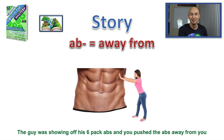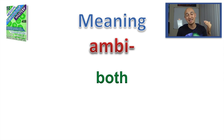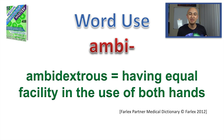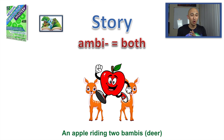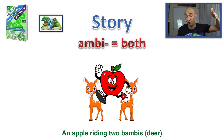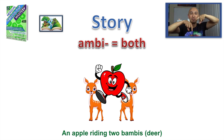Next one is AMBI, which means 'both.' Ambidextrous means having equal facility in the use of both hands. The image is an apple riding two Bambis — two deer. So an apple was on top of two Bambis, riding them. AMBI means both.